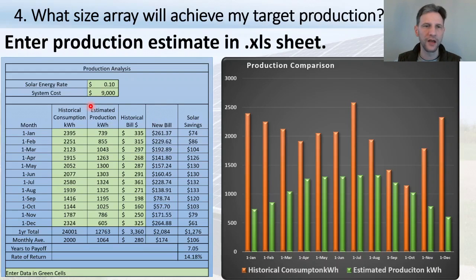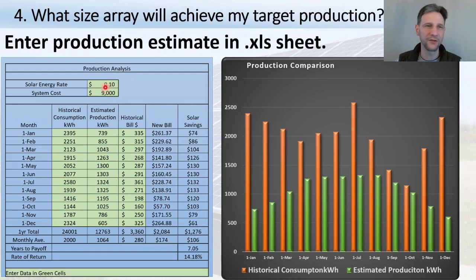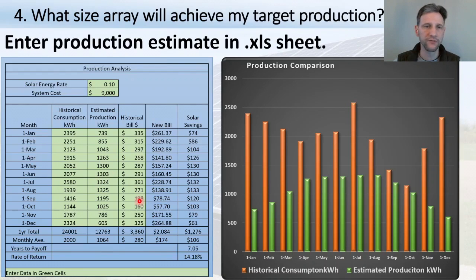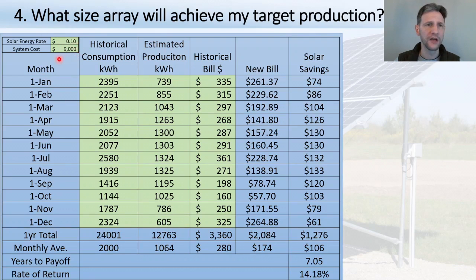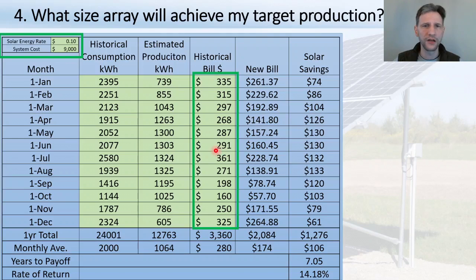My utility charges an extra base fee each month because of the solar array connection, so I always start out a little in the hole. My analysis shows my effective per-kilowatt-hour pay rate will be about 10 cents, which I've entered into the sheet. You'll need to do that analysis for your own utility based on your bills. Then enter your expected system cost — in my case $9,000.